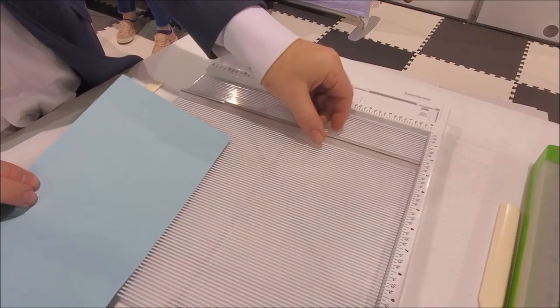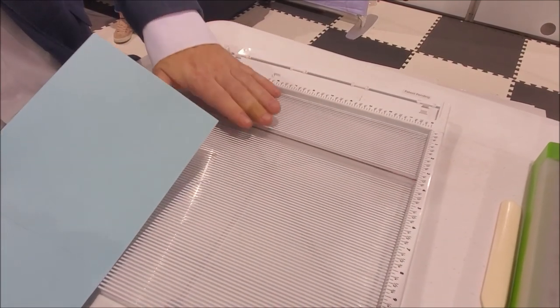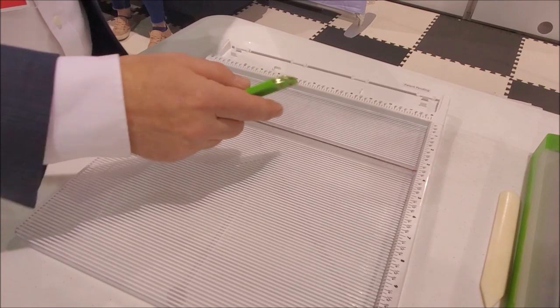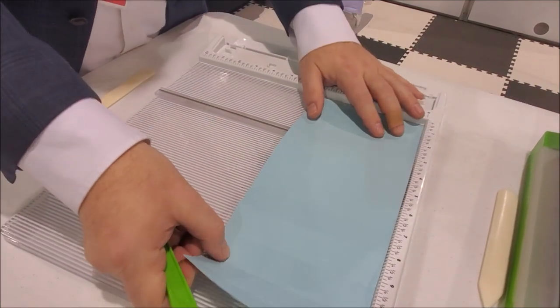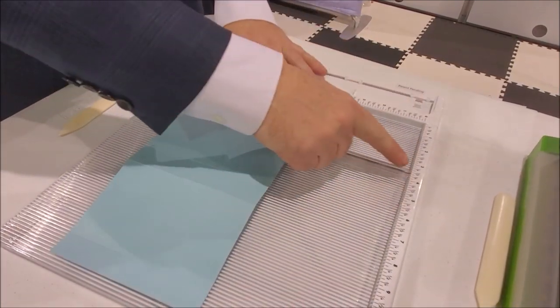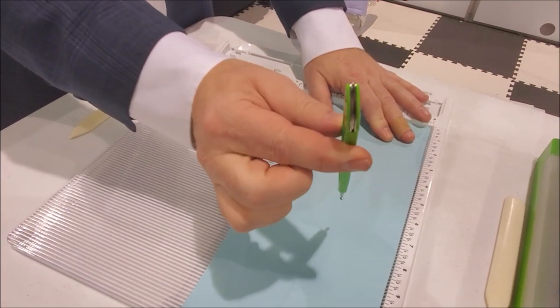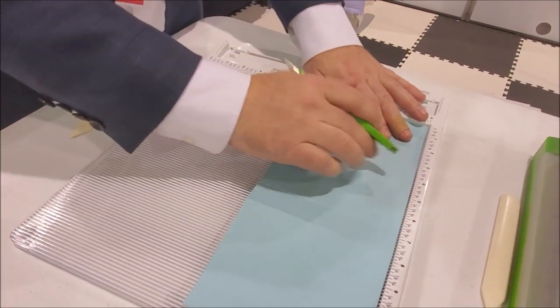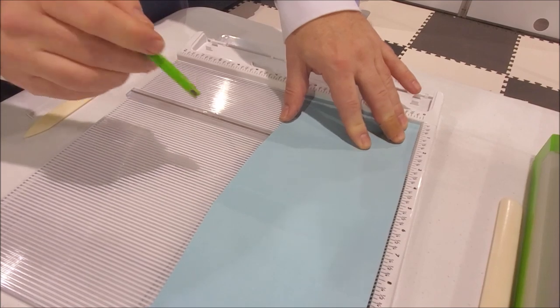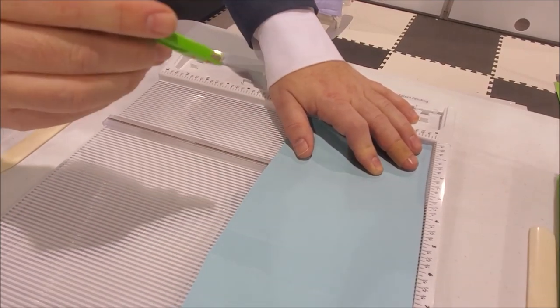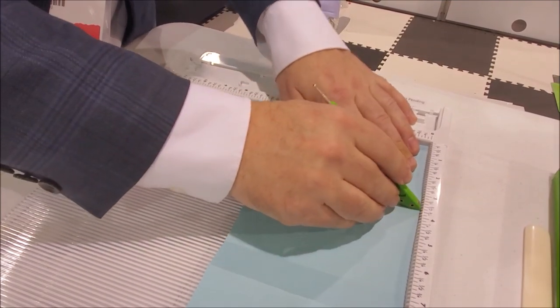It does just the opposite of the way consumer products work. They put paper over a channel—over the scoring rule—and this is different. It doesn't displace the fiber, it actually molds the fiber, pushing it into a mold.